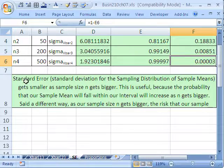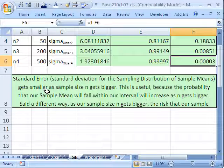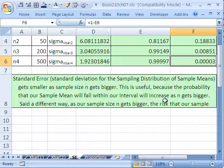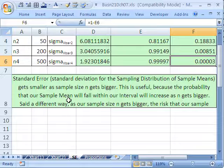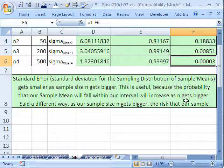Standard error gets smaller as the sample size n gets bigger. This is useful because the probability that our sample mean will fall within our interval will increase. Probability increase as n gets bigger.